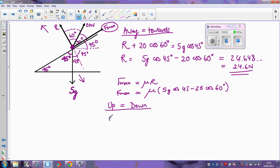So acting up the slope, I've got all of f max in this direction, and I've also got the component of this 20 newton force which is acting in the same direction as f max, and that's just going to be 20 cos 30 degrees. And those two forces combined must equal the component of the weight, which is acting in a downward direction, and that's 5g cos 45 degrees.